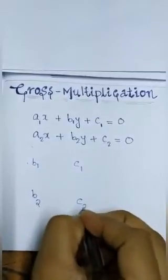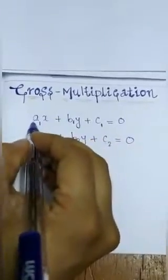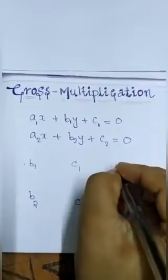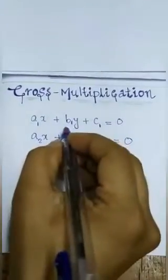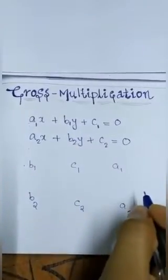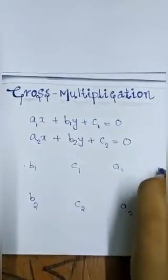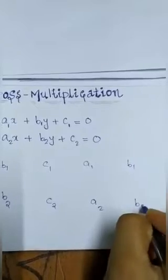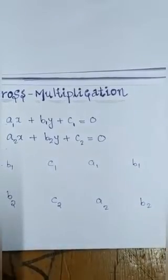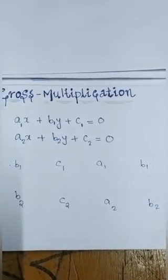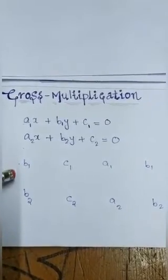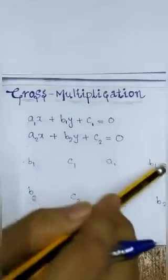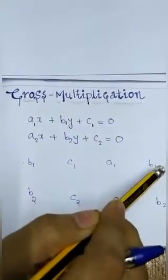Next, write c1 and c2 — the constant terms. Then the coefficient of x: a1 and a2. Then again come back to the coefficient of y: b1 and b2. So we have written the coefficients of y, constant terms, and x, starting and ending with the coefficient of y.